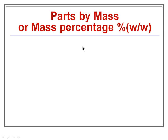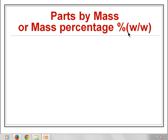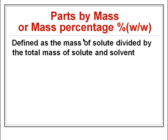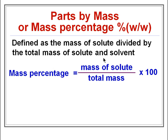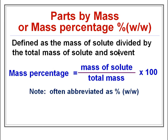In this video we will study about the parts by mass, or mass percentage. This is also called mass percentage and represented by percentage weight by weight, or mass by mass. According to the definition, the mass percentage of any solute is defined as the mass of solute divided by the total mass of solute and solvent, multiplied by 100.